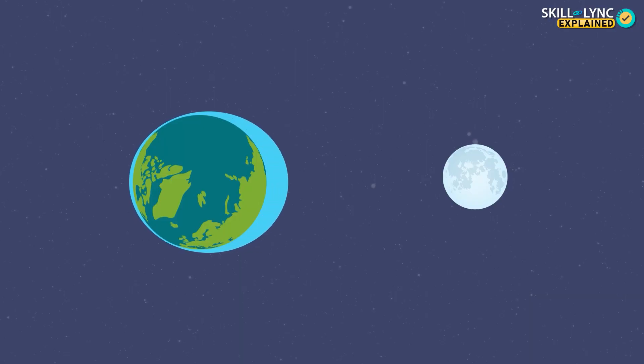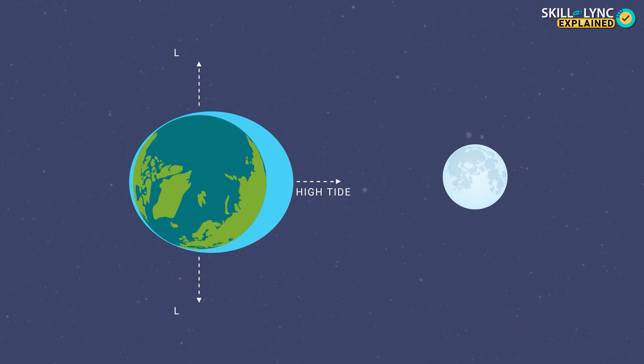But what causes them? Well, there are many factors which are responsible for this, but the most important one is the moon's gravity. The moon's gravity pulls the ocean's water towards it. This causes a high tide in the areas directly facing the moon, but this also lowers the sea level on either side of the earth.